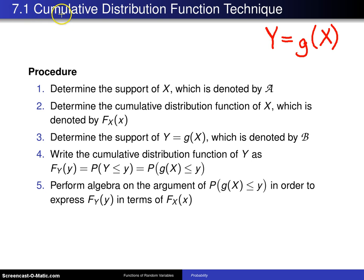The first technique is known as the cumulative distribution function technique, covered in section 7.1. The second technique is the transformation technique, introduced in section 7.2. And the third technique is the moment generating function technique, introduced in section 7.3.